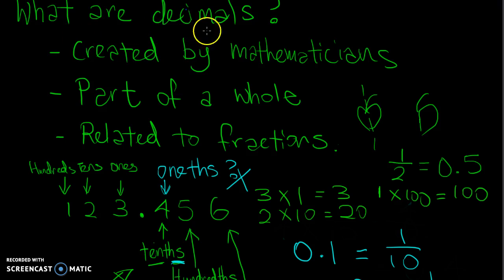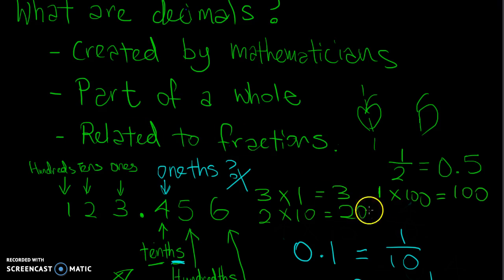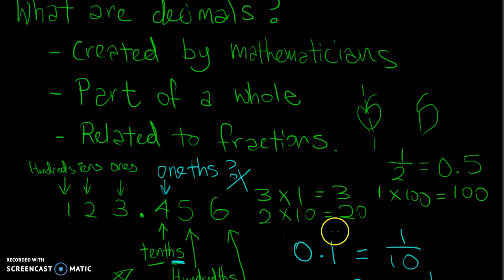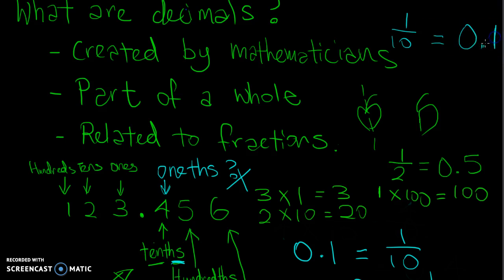To recap: decimals are created by mathematicians to represent part of a whole. They are very related to fractions. For example, the fraction 1 out of 10 is actually the same as 0.1 — this is defined by mathematicians. So instead of saying I'm going to give you 1 out of 10 parts of an apple, you can say I'm going to give you 0.1 of an apple.